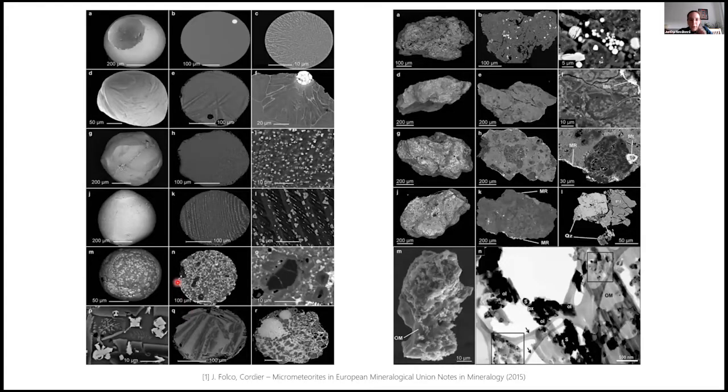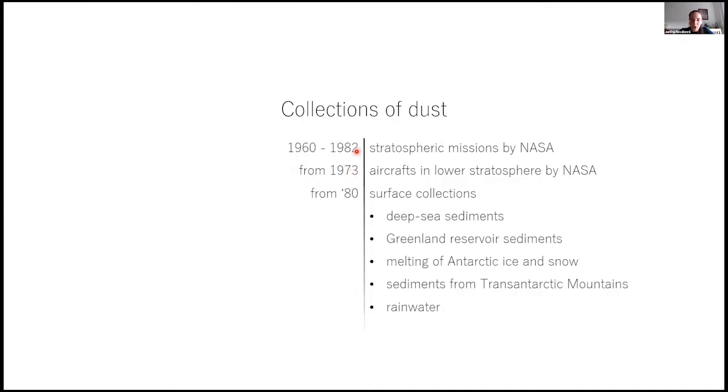The main references are these two publications by Polka, Cordier, and Ginger. So for you to have an image of how the micrometeorites look, what they look like, these are just a few samples of different shapes and sizes.